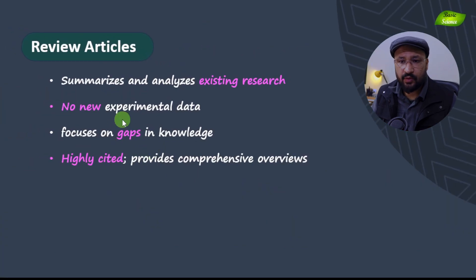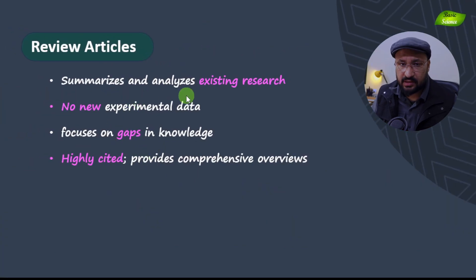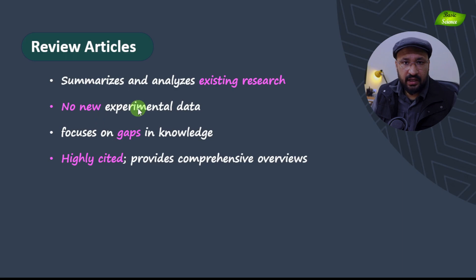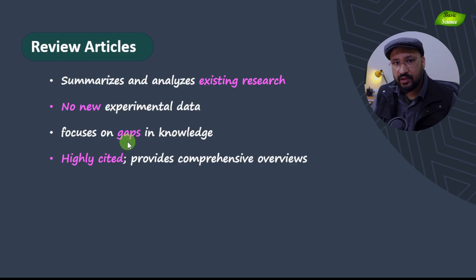Original research articles are the first format of academic publishing. The second type is the review article. In a review article, you are not doing original research — instead, you summarize and analyze existing research and may gain novel insights from it. There is no experimental data collected. Review articles focus on identifying gaps in the field.